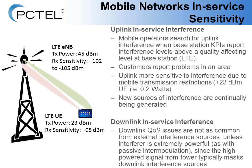For in-service testing of mobile networks, typically the uplink is tested. You find interference either by looking at base station KPIs reporting interference levels above a quality-affecting level — often in the neighborhood of minus 102 to minus 105 dBm — or customers may be reporting problems in certain areas. Uplink interference is more sensitive because the UE is limited in power, transmitting at only 23 dBm, so it doesn't take much external interference to cause a problem at the base station.